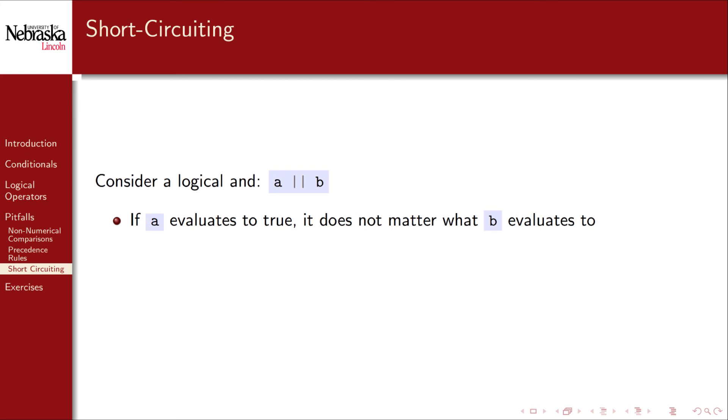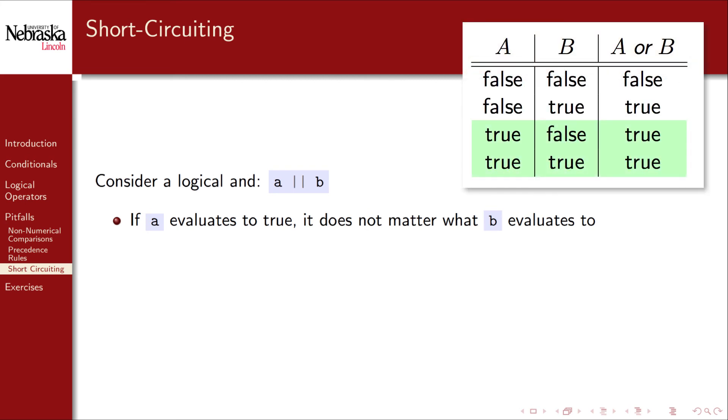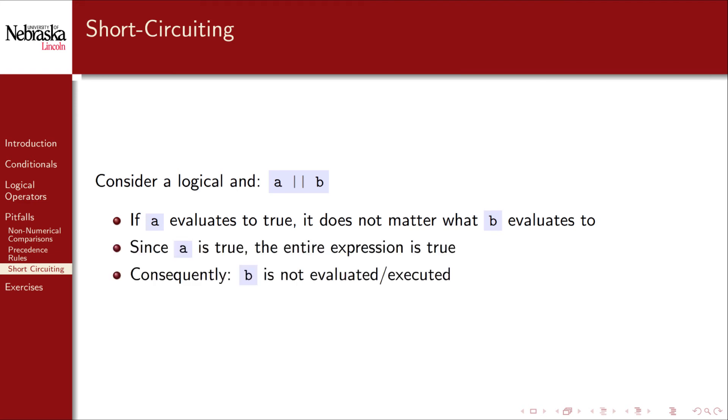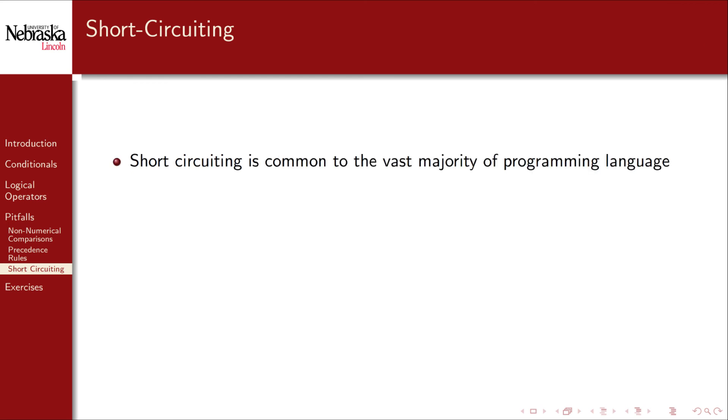A similar situation occurs with the logical OR operator. If the first value evaluates to true then it doesn't matter what the value of B is. A being true makes the entire expression true. As a consequence B is not evaluated. This phenomenon is known as short-circuiting because the evaluation of a logical expression ends prematurely and is short-circuited.